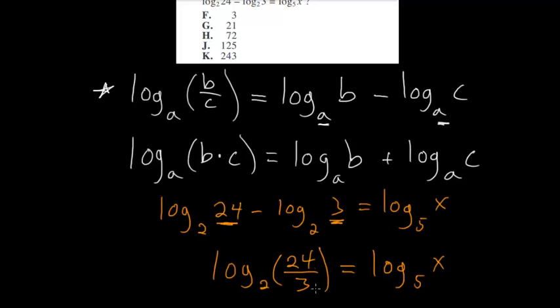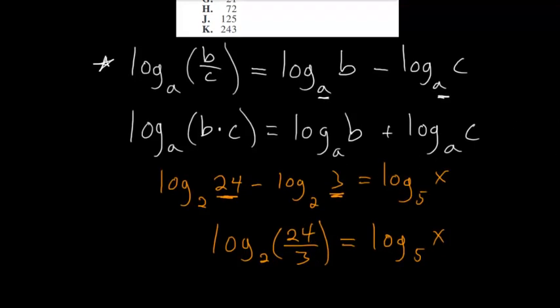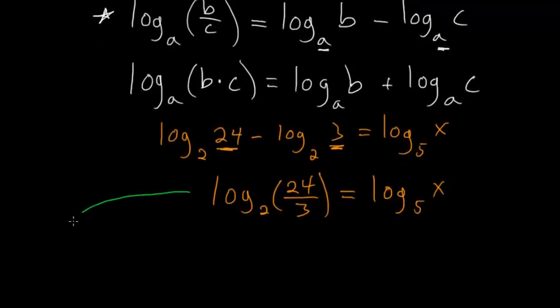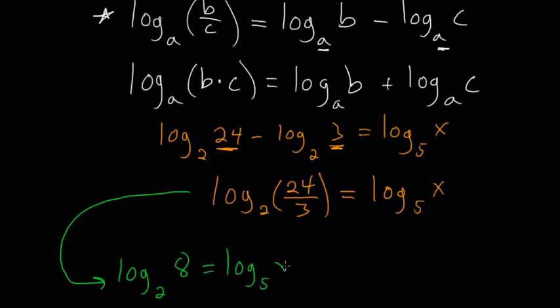Now 24 divided by three, we can simplify that. 24 divided by three is just eight. So we have log base two of eight equals log base five of x.